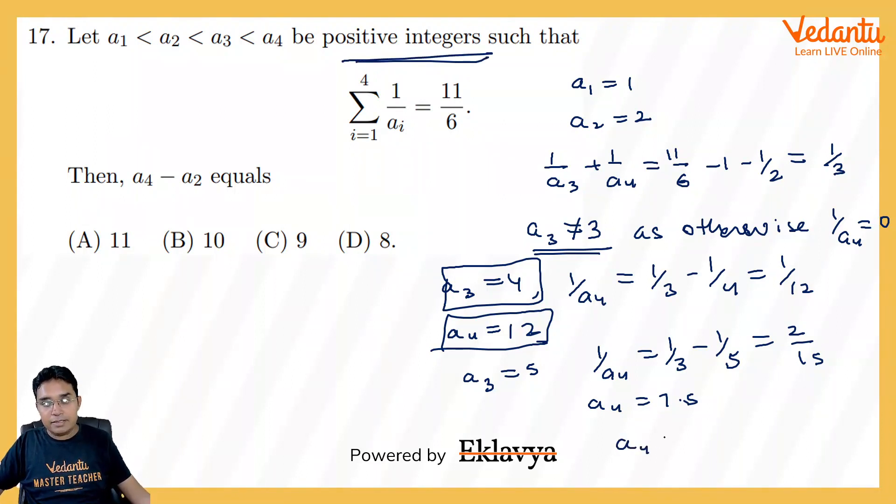Now if a4 is 6 or greater than 6, then 1 upon a4 plus 1 upon, sorry, if a3 is 6 or more, then 1 upon a3 plus 1 upon a4 will be at max 1 upon 6 plus 1 upon 7, isn't it? And which is lesser than 1 upon 3 which we are looking for. So this is also not possible. So I think that is the own possibility.